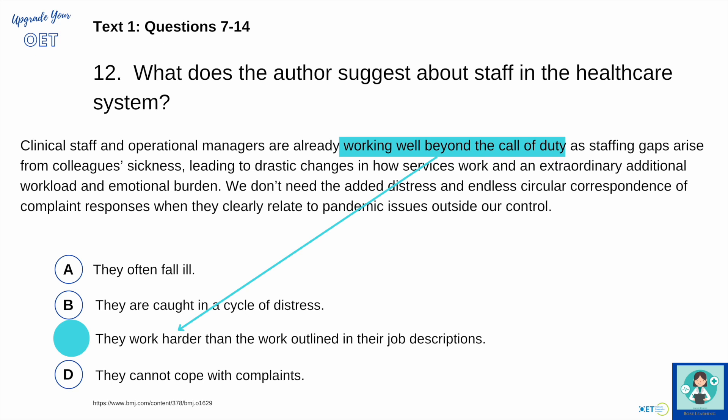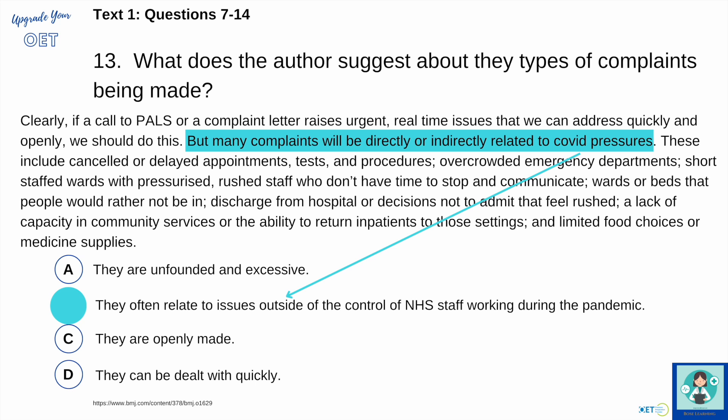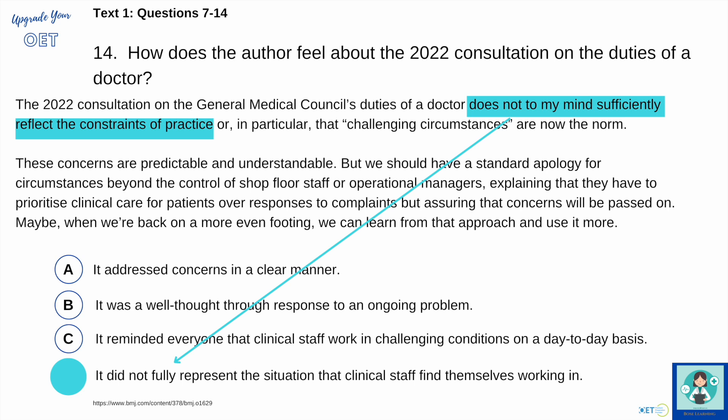Number twelve: they worked well beyond the call of duty — they worked harder than outlined in their job descriptions. That's something healthcare professionals can all relate to. Number thirteen: many complaints will be directly or indirectly related to COVID pressures, so these are outside the control of staff — it's nothing to do with them personally but they still have to deal with them. So it's option B. And number fourteen: this consultation does not, to the author's mind, sufficiently reflect the constraints of practice — it did not fully represent the situation that clinical staff find themselves working in. So it's option D.